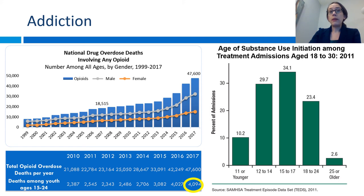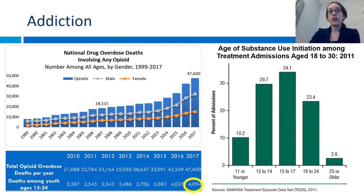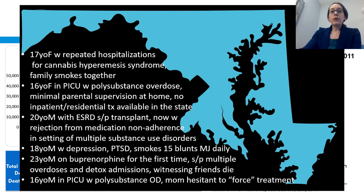I also learned from my own patients and from the research that most adults with substance use disorders started using as adolescents. This graph shows the very young age of substance use initiation among young adults being treated for addiction. I also learned that the younger someone tries a substance such as alcohol or opioids, the higher risk they have of becoming addicted due to the developing adolescent brain and the reward pathways that make youth more susceptible to developing addiction. I wanted to give you a snapshot of some of the patients I've seen even in the last year, to think about what are some of the gaps in the care system.